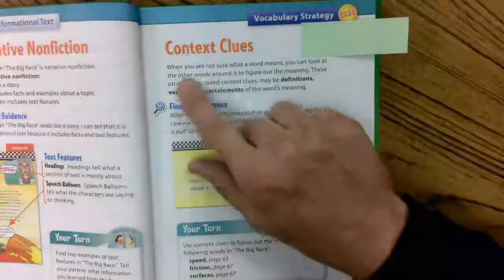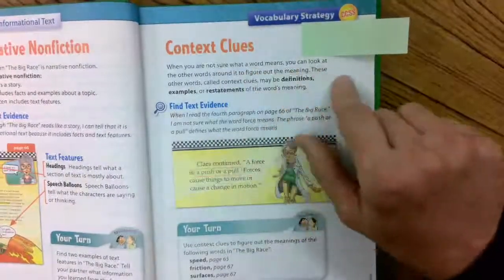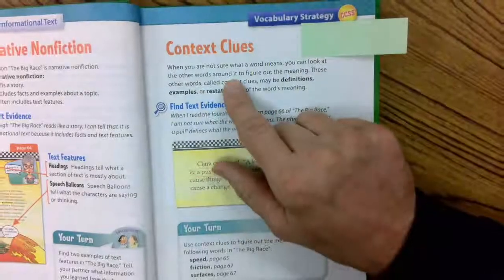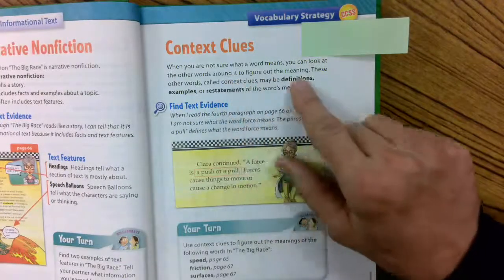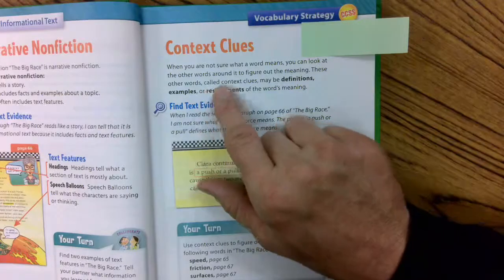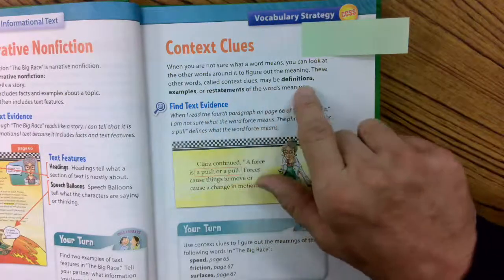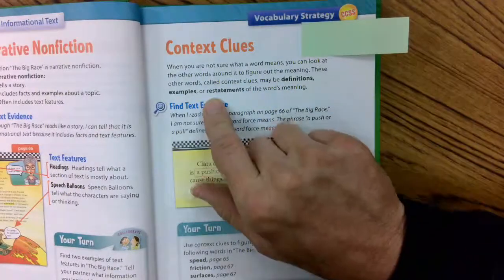What are context clues? When you're not sure what a word means, you can look at the other words around it. I've been trying to model this in our stories this week to figure out its meaning. These other words called context clues may be definitions, examples, or restatements.